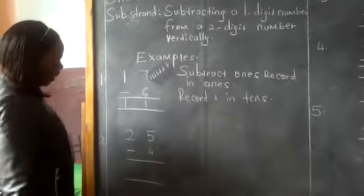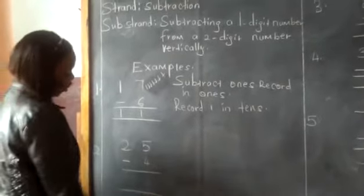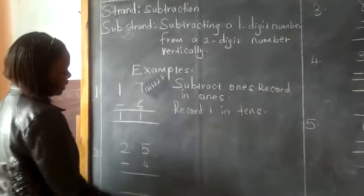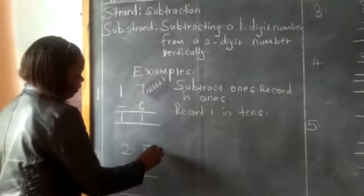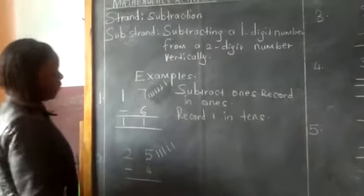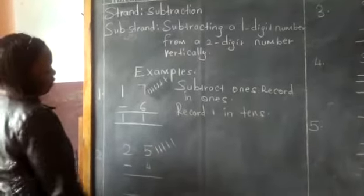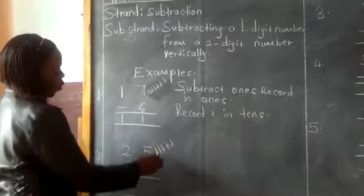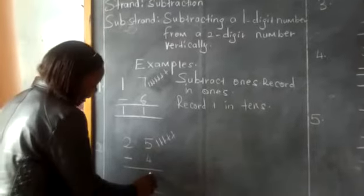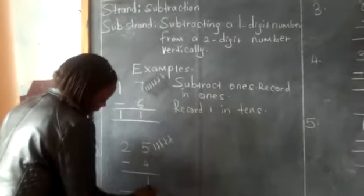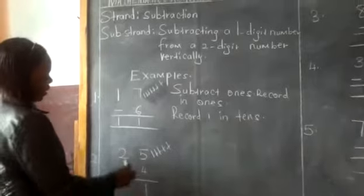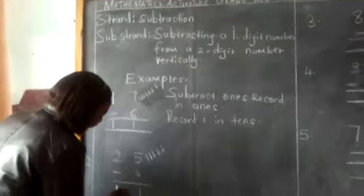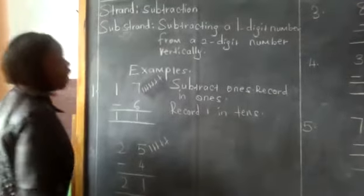We have the second question: 25 minus four. We start here at the side of ones. We give value to number five — that is the value of number five. We take away four. We get one. We record one here at the side of ones. On the side of tens, we have number two. We bring down number two. Our answer is 21.